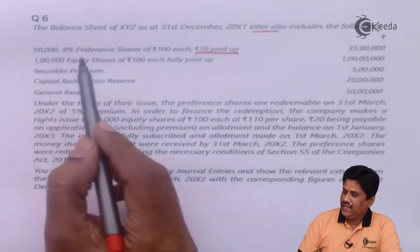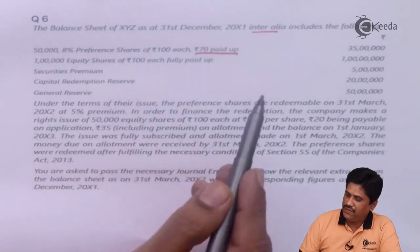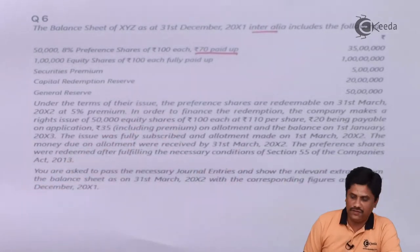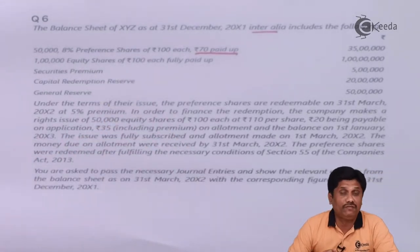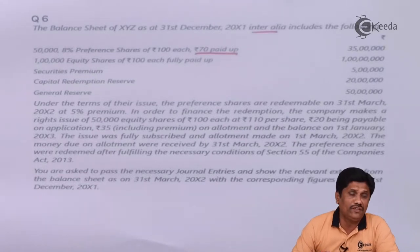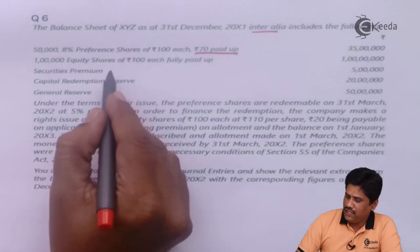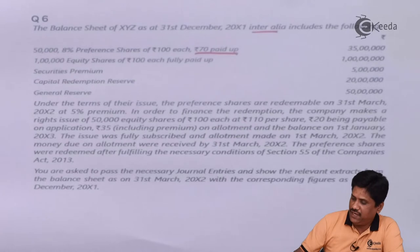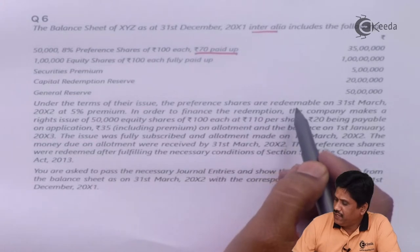Next items: equity shares of Rs 100 fully paid, Rs 1 crore; securities premium Rs 5 lakhs; capital redemption reserve Rs 20 lakhs (existing CRR); general reserve Rs 50 lakhs, which is a free reserve. Securities premium is not usable for redemption as per Section 133 under accounting standards, so only general reserve is relevant.